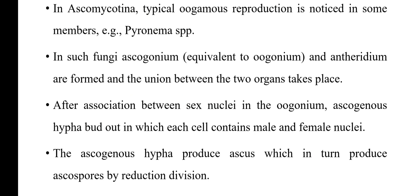In Ascomycotina, typical oogamous reproduction is noticed in some members — for example, Pyronema. In such fungi, ascogonium and antheridium are formed and the union between the two organs takes place. After association, sex nuclei are present in the ascogonous hyphae, in which each cell contains male nuclei and female nuclei. The ascogonous hyphae produce asci, which in turn produce ascospores by reduction division, that means meiosis.